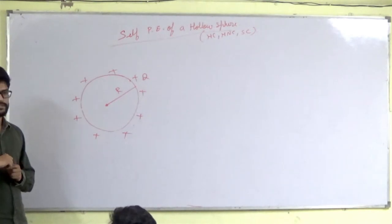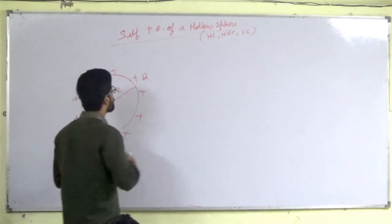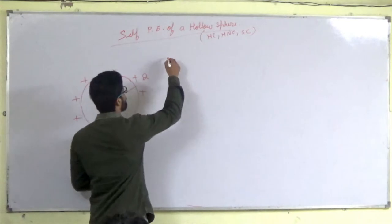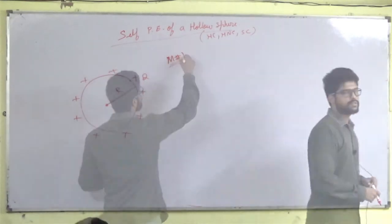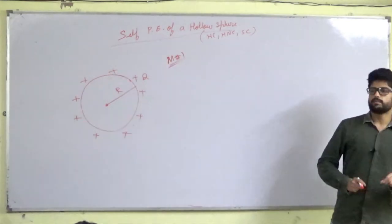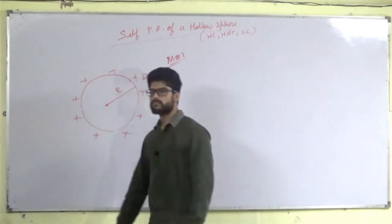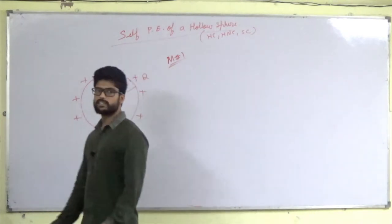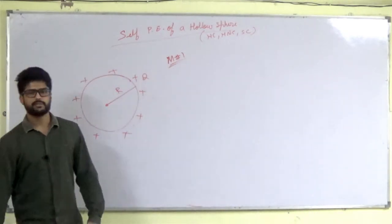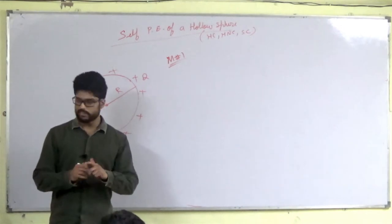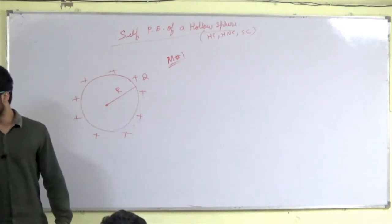So, method number one — the SCV method. Every question is different, so every time there is a new and different concept. Here we have three concepts. Method number one is what we are doing now.